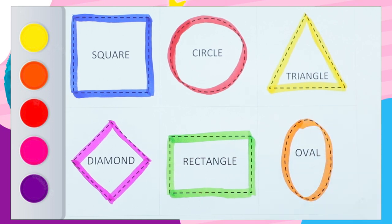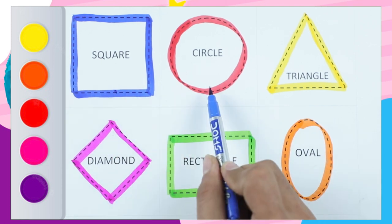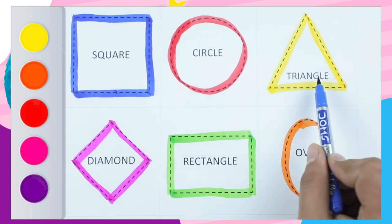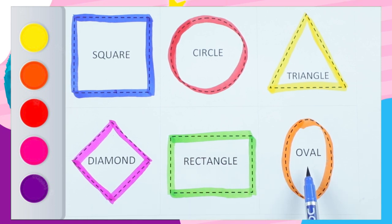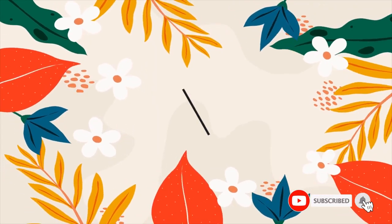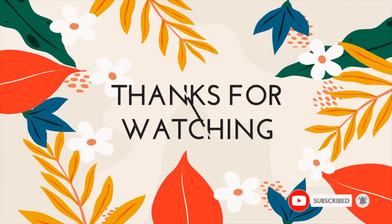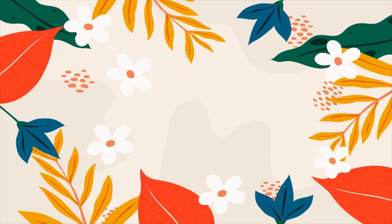Green color square, square, circle, triangle, diamond, rectangle, and oval. Rectangle and oval — yellow color oval. Thank you!